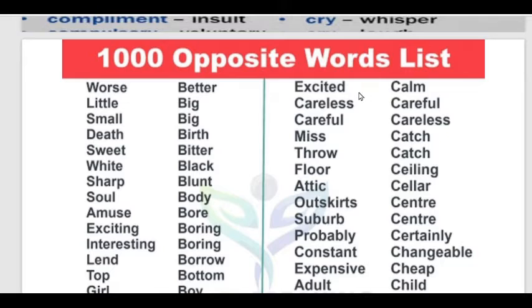Continuing: Girl – Boy. Excited – Calm. Careless – Careful. Catch – Miss. Floor – Ceiling. Attic – Cellar.